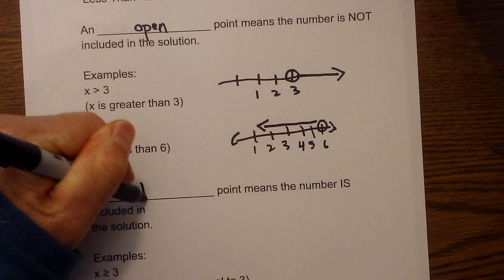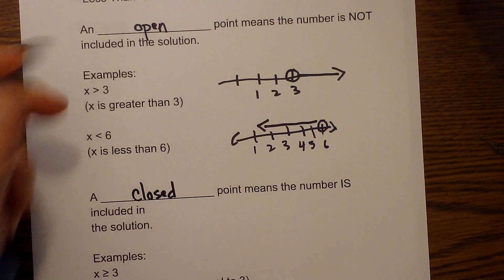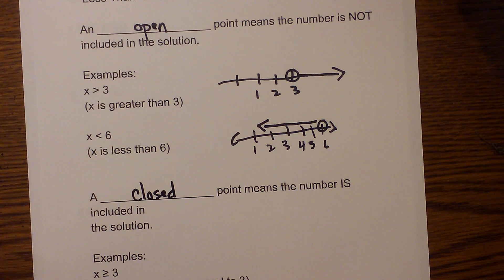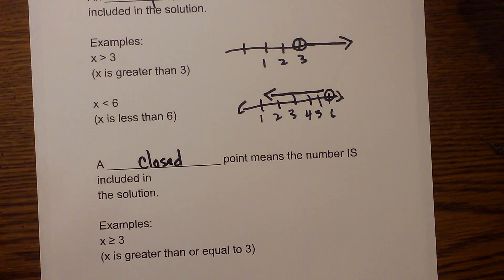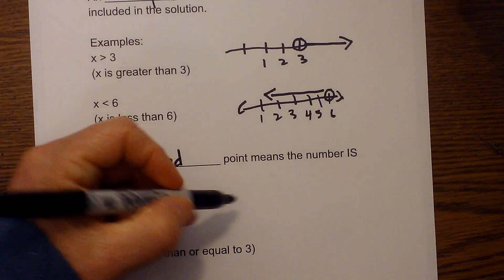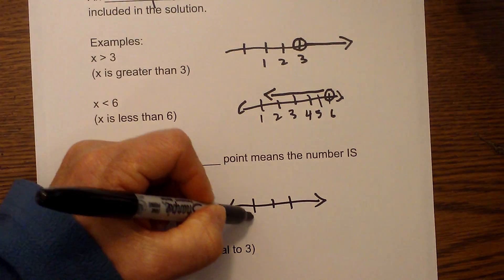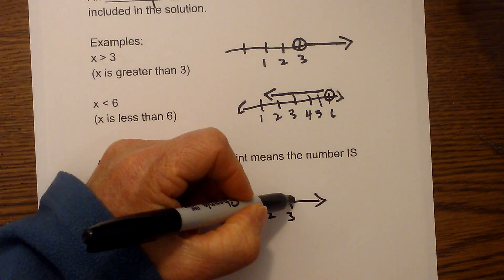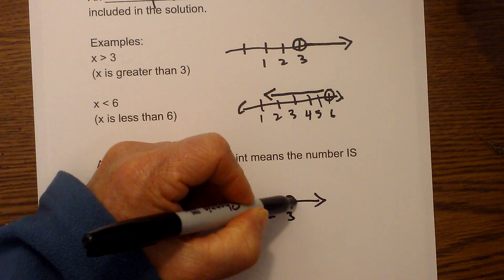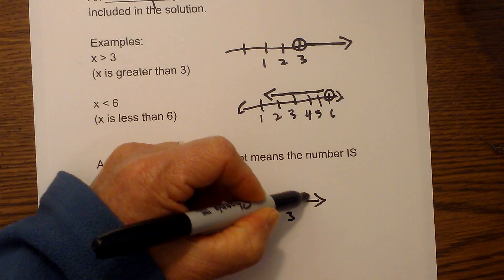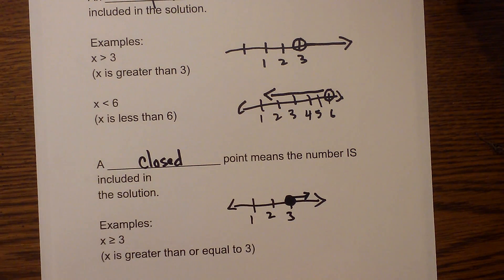A closed point, or you may say a shaded dot, means that the number is included in the solution. So x is greater than or equal to 3, so we have 1, 2, 3, and this is greater than, so it is shaded in, and would go in that direction.